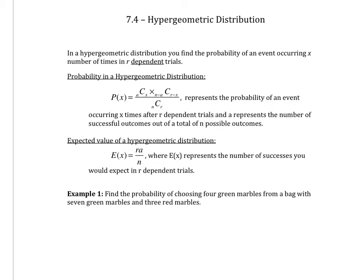When we're looking at expected value, it's the same variables as above, so R times A divided by N, where E of X, your expected value, represents the number of successes that you would expect in R-dependent trials. So this will make more sense once we do an example.